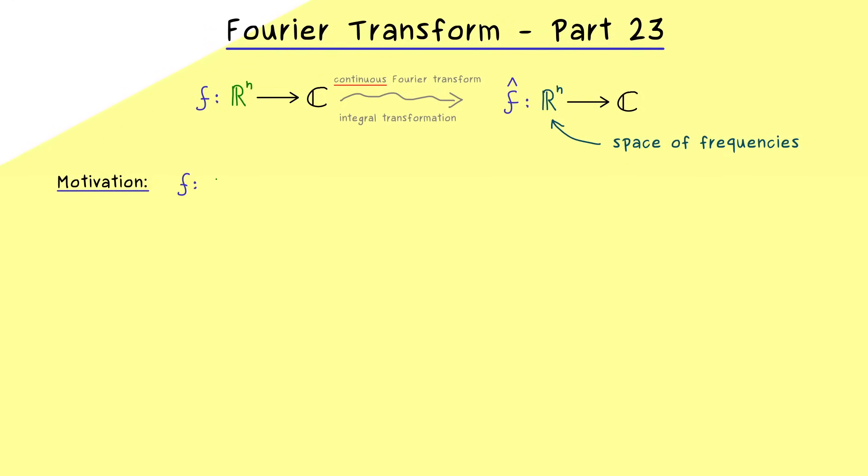Therefore I would say we first should write down the connection between the continuous Fourier transform and our original Fourier series. Therefore we first stay one dimensional and periodic for our function f. This means we can sketch the graph of f on a compact domain. For example we can say we have minus capital T here and plus capital T on the right. Hence the function is 2T periodic and it should be integrable on this domain.